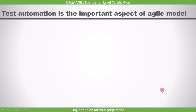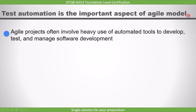Based on what we covered till now in this syllabus, it is clear that test automation is the important aspect of the Agile model. Agile projects often involve heavy use of automated tools to develop, test, and manage software development.